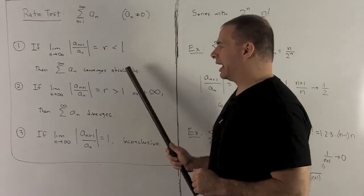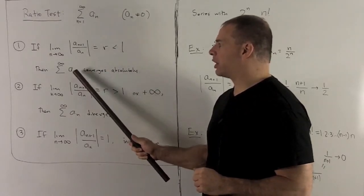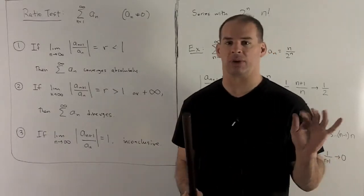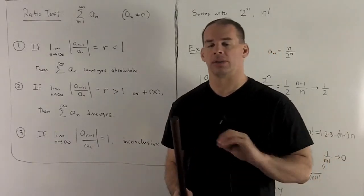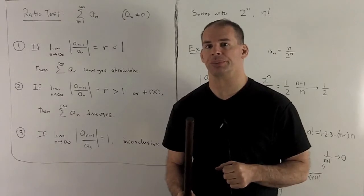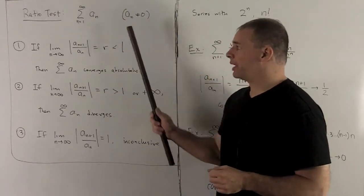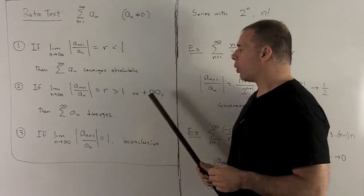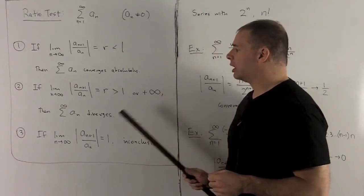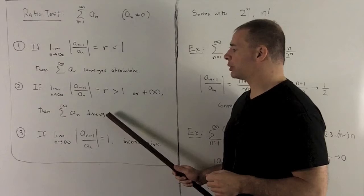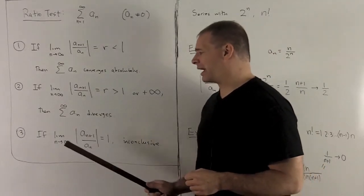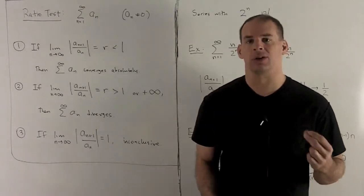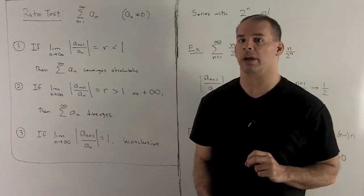Absolute convergence means not only does the a sub n series converge, but the series of its absolute values also converges — meaning if there are signs out in front, you can throw all of them away and it'll still converge. If the same limit gives an r bigger than 1 or plus infinity, the series diverges. And if the limit equals exactly 1, the test is inconclusive and we'll need to do more work.